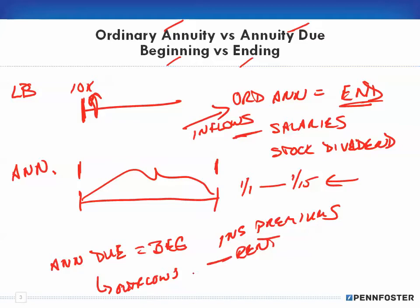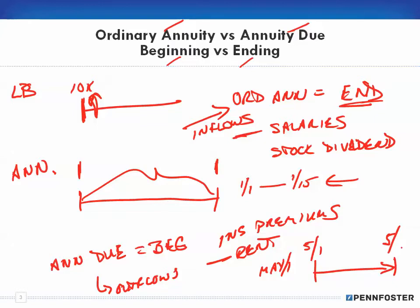Think about rent as an example. This video is being made on May 1st. If I'm paying my rent for the whole month of May — there are 31 days in May — I'm not going to pay my rent at the end of the period. I'm paying at the beginning of the period, and notice that's money going out. So that has a tendency to be an annuity due.